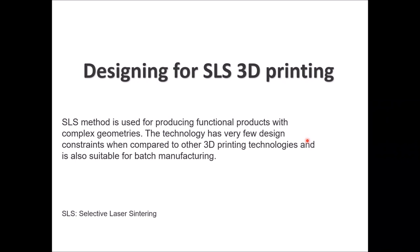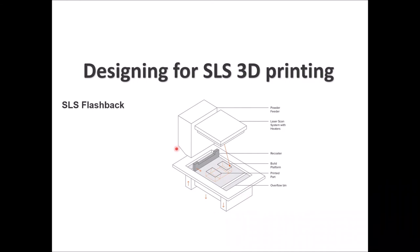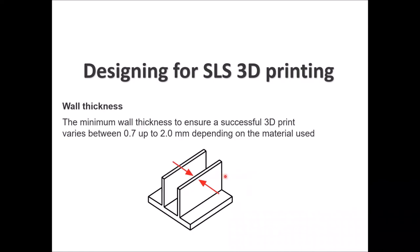Moving on to designing for SLS — Selective Laser Sintering — which is used for producing functional products with complex geometries. The technology has very few design constraints, giving you almost complete design freedom compared to other 3D printing methods. It is well-suited for small batch manufacturing of around 1 to 10 parts. The SLS process uses a laser reflected on the surface to sinter powder. Minimum wall thickness should be between 0.7 to 2 mm depending on the material used.